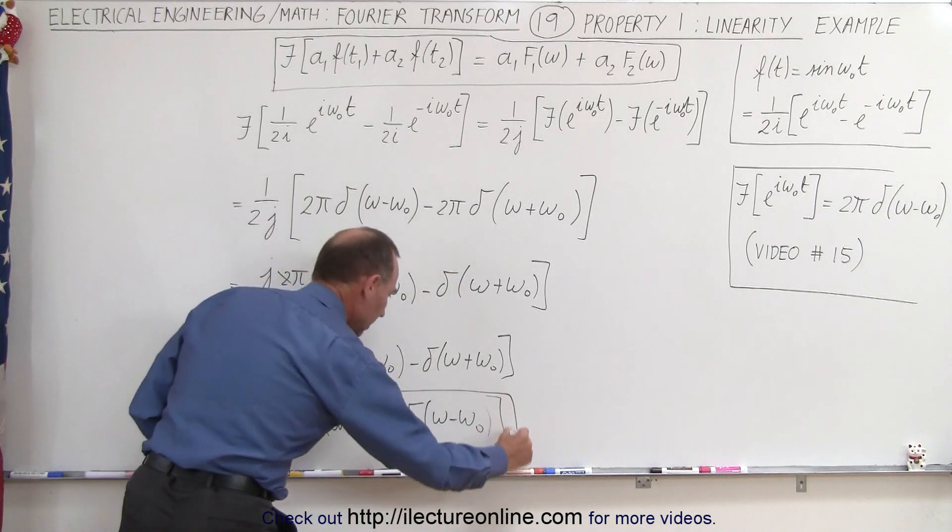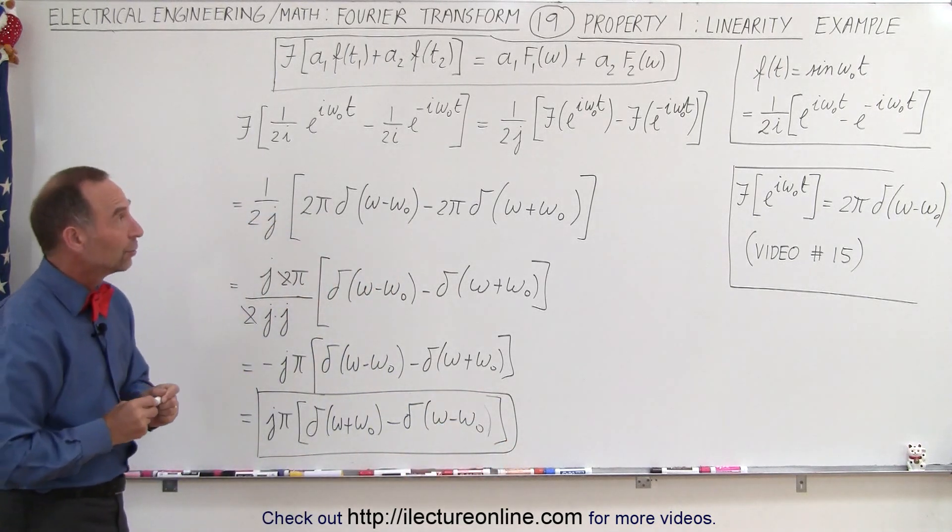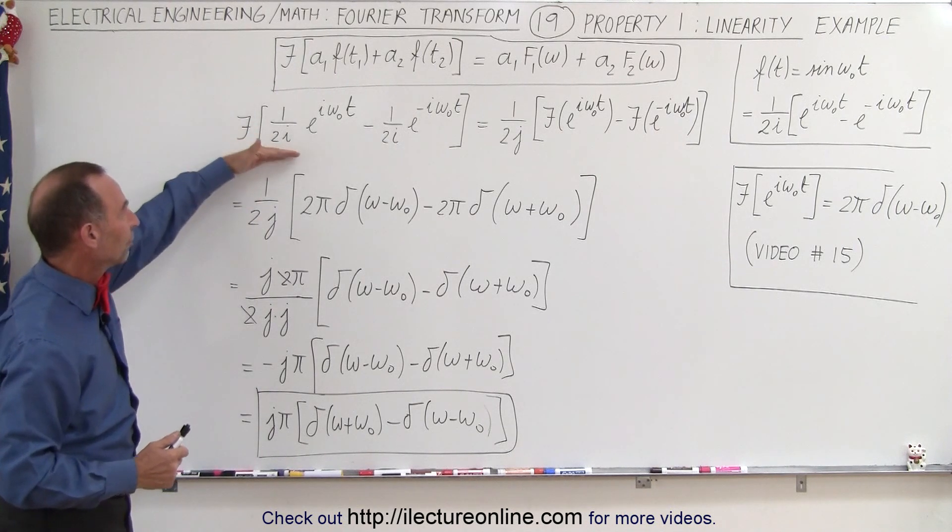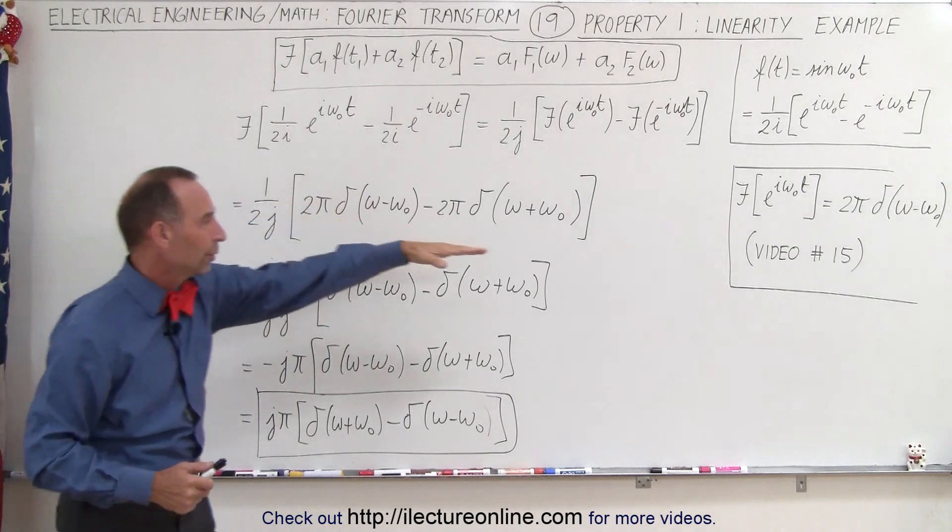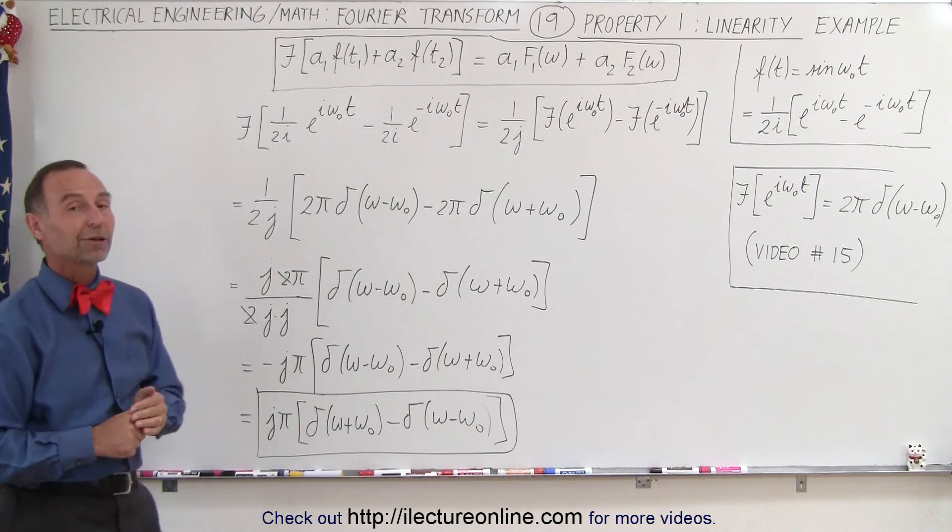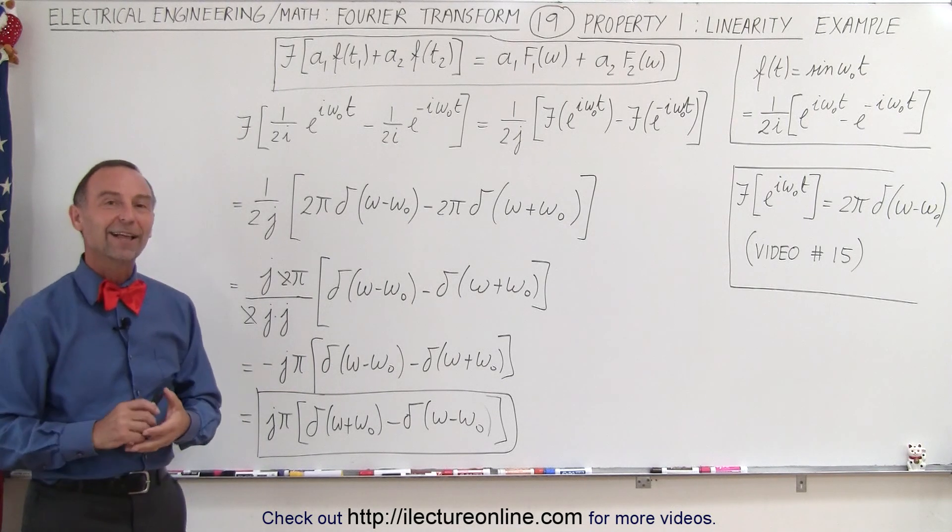This is the Fourier transform of the sine of omega naught t. Notice how the linearity property helps us set it up in a format where we can apply what we learned in video 15, and before you know it, there's your Fourier transform. It's not so hard when you can use these tricks. That's how it's done.